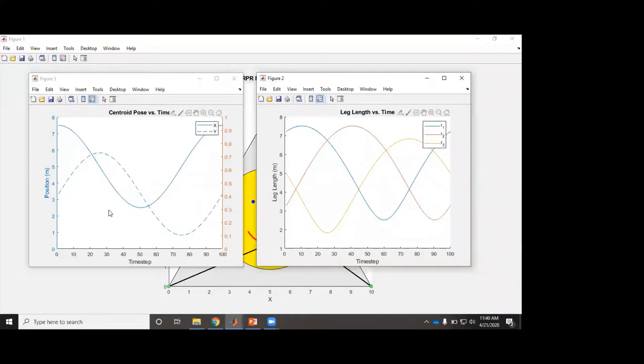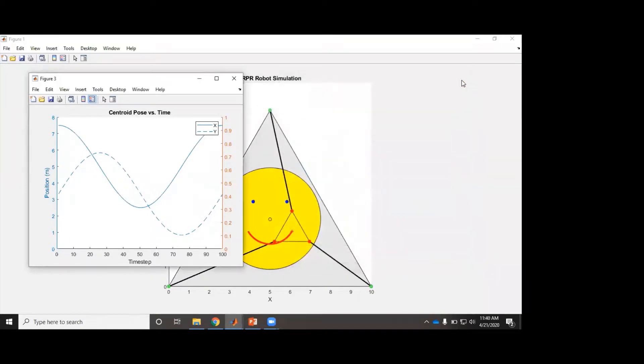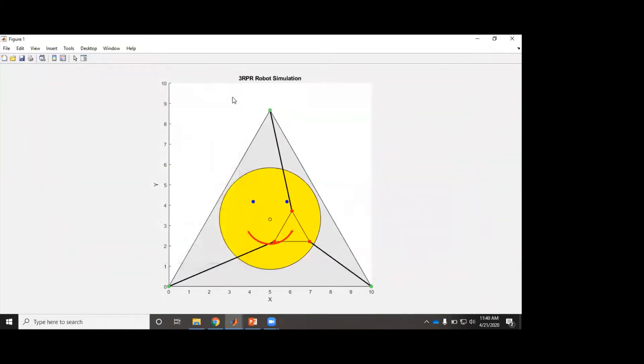So this is just graphs of the centroid pose versus time, so X and Y, and then the lengths of the legs. And that was for the last one for the smiley face. So yeah, even though the robot gets real low, so it seems like, oh, that's a singularity, there is only one possible solution. So it's not going to go out of control because it knows what solution to choose.